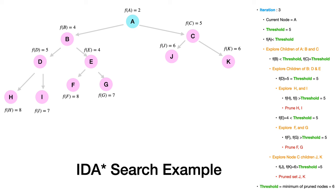B's children D and E both have F(n) values less than the threshold, so we pursue them. But H, I, F, and G have F(n) values greater than the threshold, so we don't pursue their children. For node C, children J and K have F(n) values greater than 5, so they are also not pursued. Nodes H, I, F, G, J, and K are pruned.